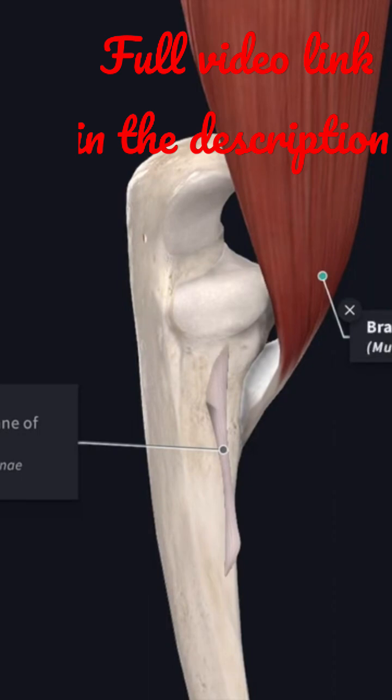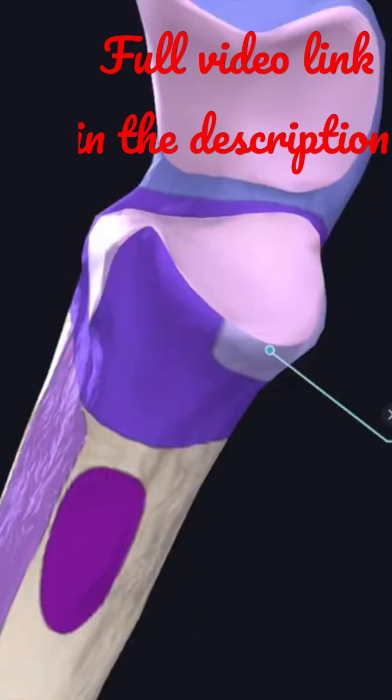The lower end of the ulnar tuberosity gives attachment to the oblique cord. The medial margin of the anterior surface is sharp and presents a tubercle.